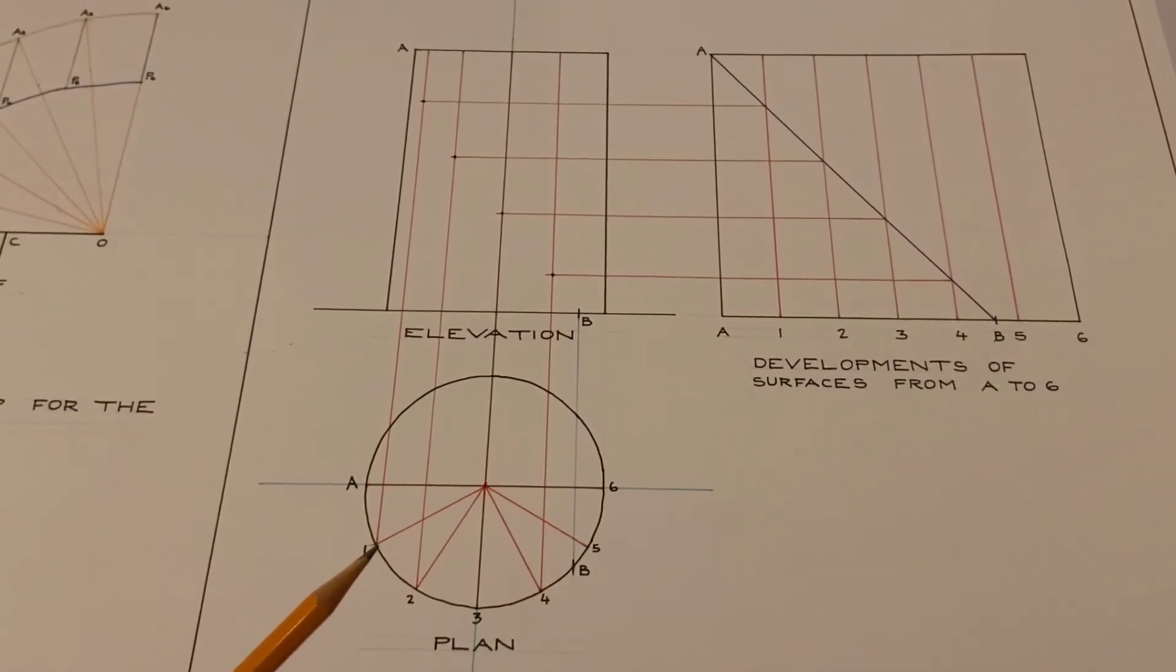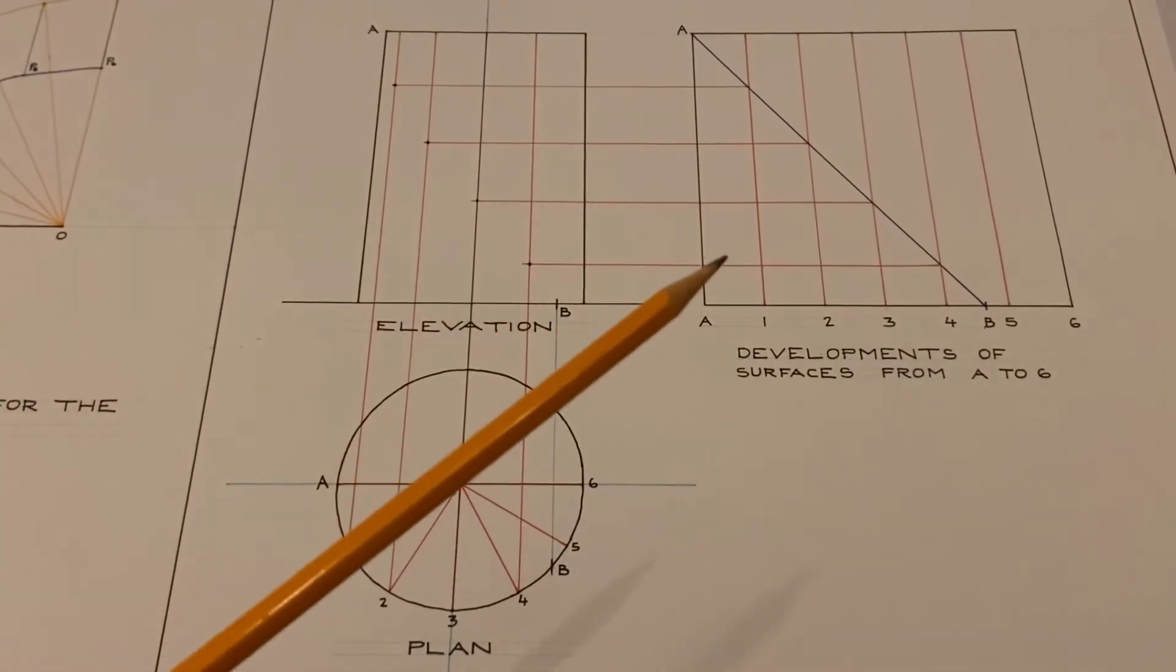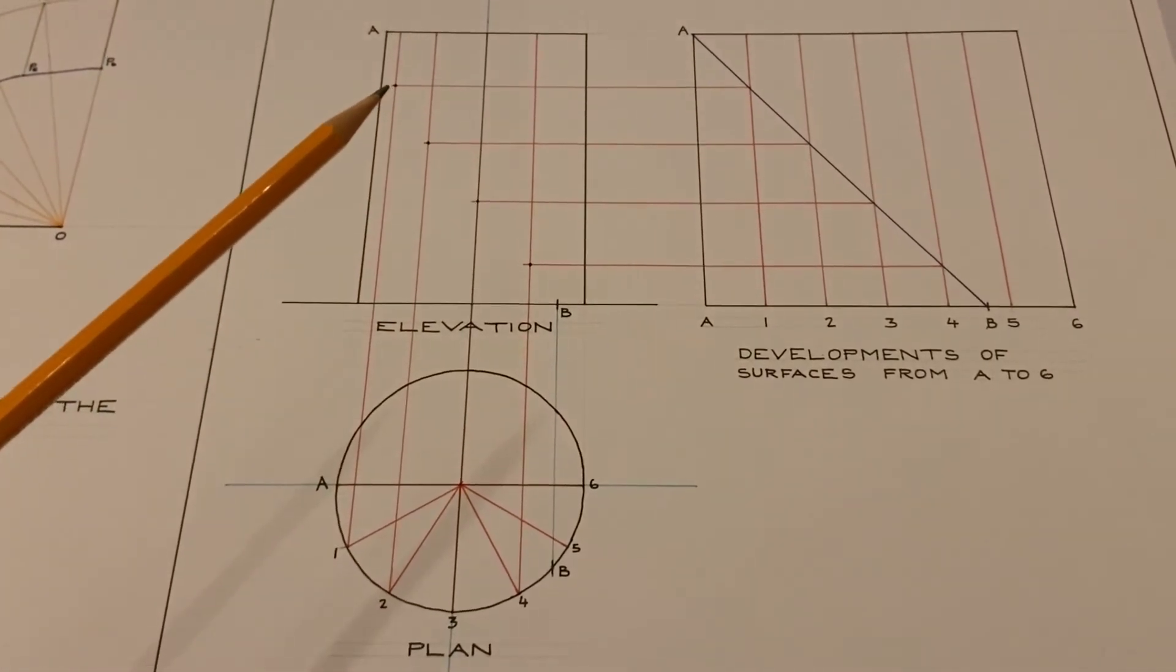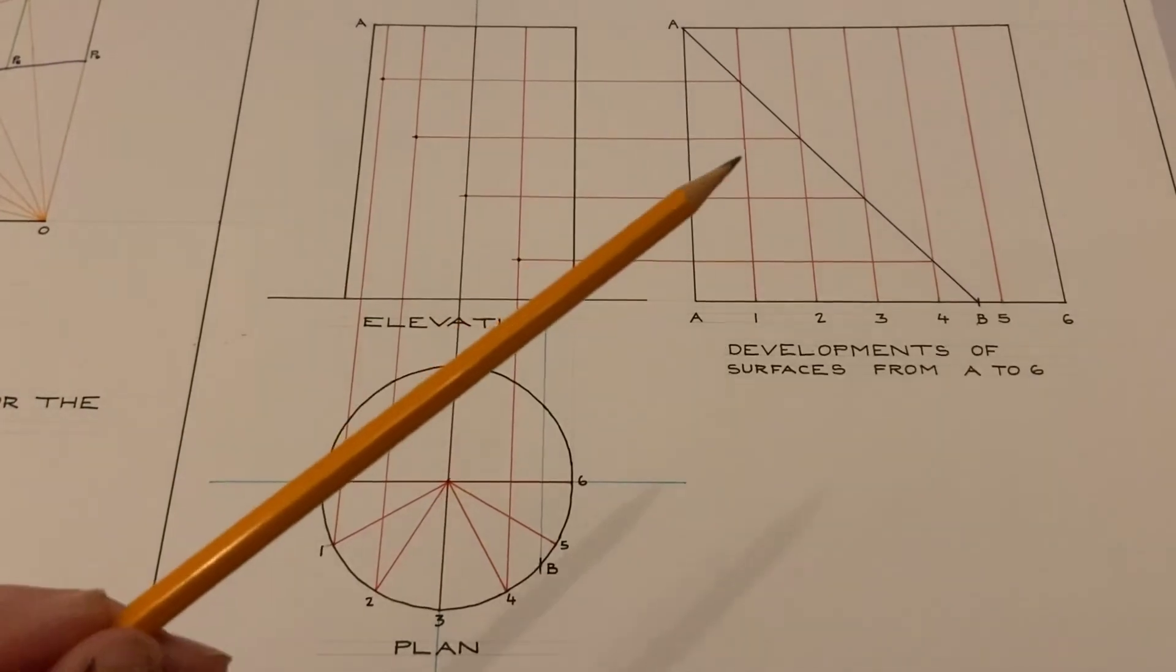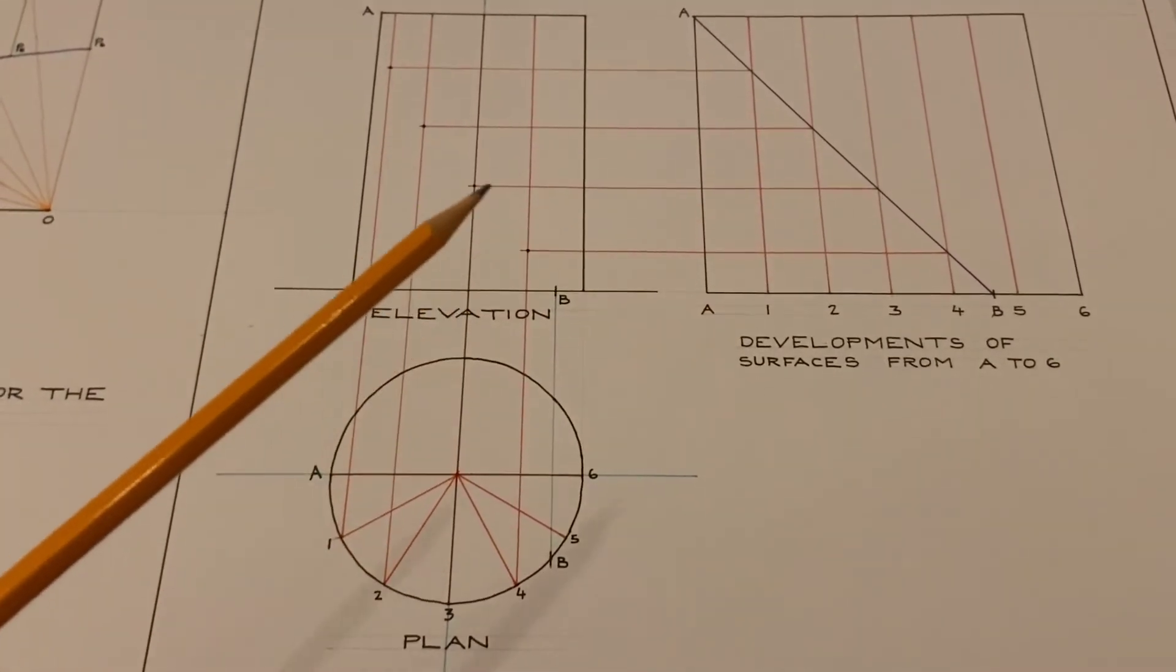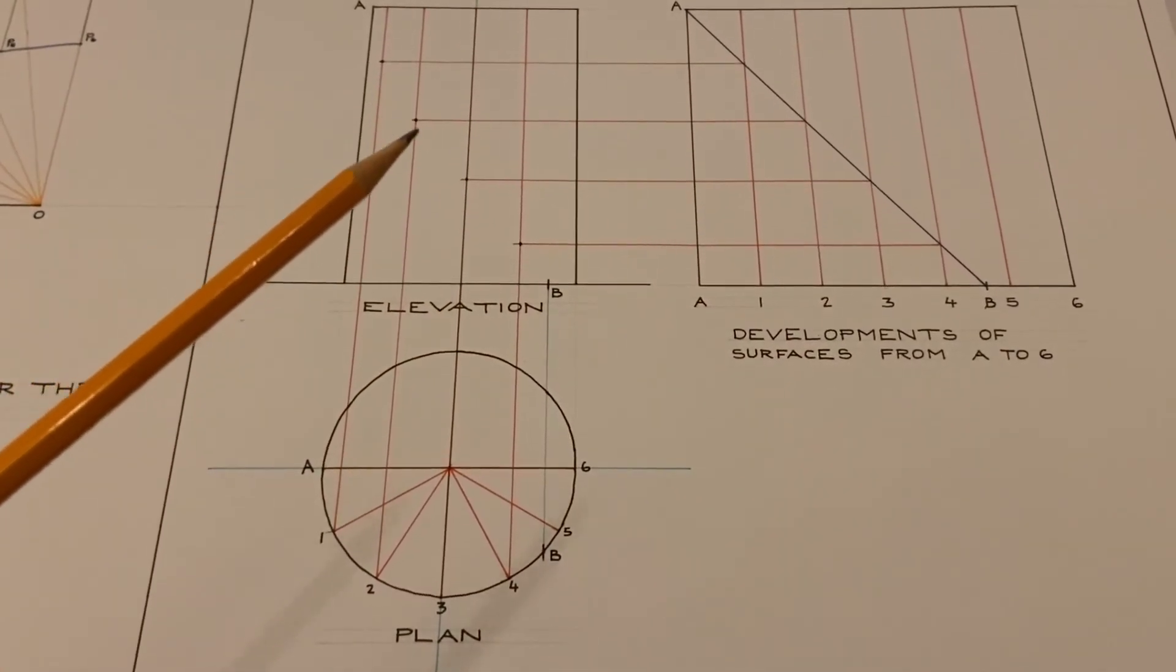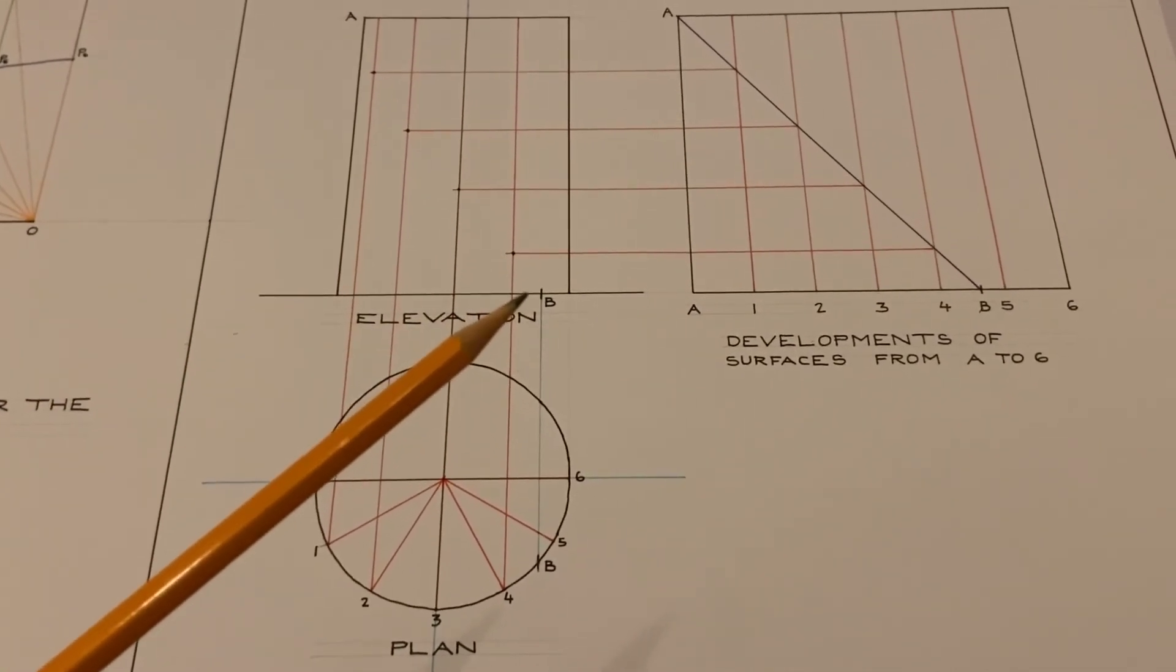So beginning here with point number 1 as that line is extended up into elevation there's line number 1 on the development. We bring that height over until it cuts the line 1 in the elevation. And we bring 2 onto 2, 3 onto 3 and finally 4 onto 4 and then we indicate each one of those points. Those are the points on the helix in elevation.